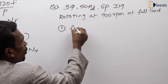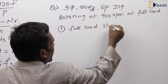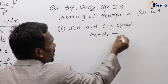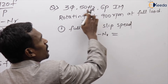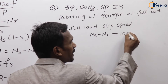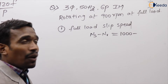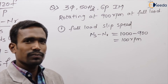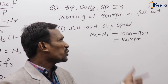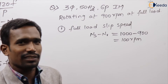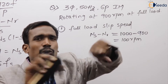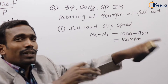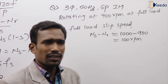First question: what is the full load slip speed? The formula is NS minus NR. For a six-pole 50 Hz machine, the synchronous speed is 1000 RPM. The rotor speed is 900 RPM. So the slip speed is 1000 minus 900 equals 100 RPM. Just by seeing the question we can tell the answer — six-pole 50 Hz is 1000 RPM, rotor speed is 900, so slip speed is 100 RPM.